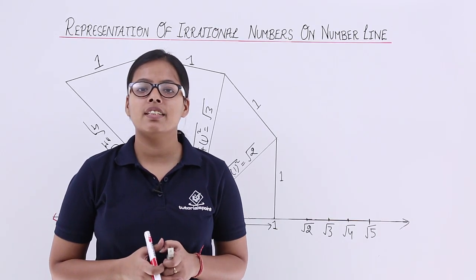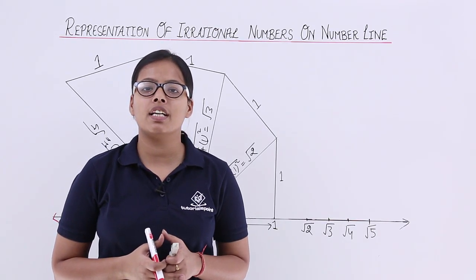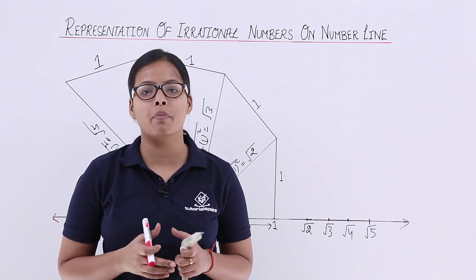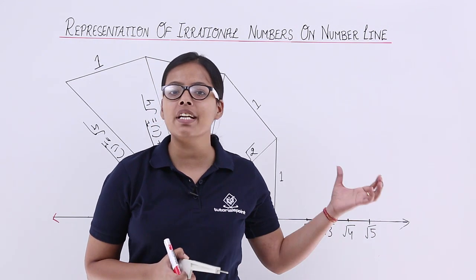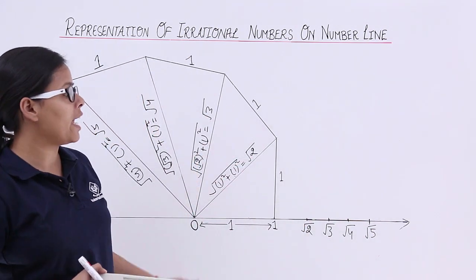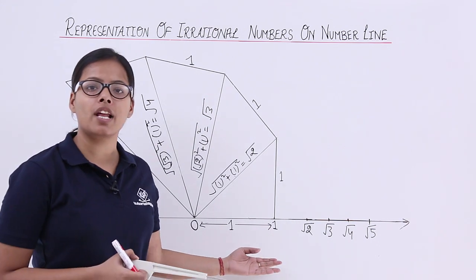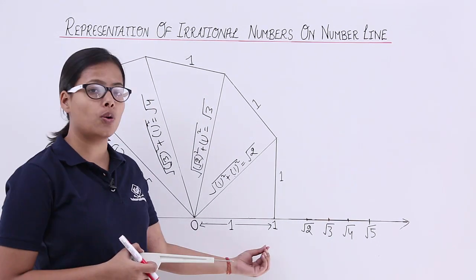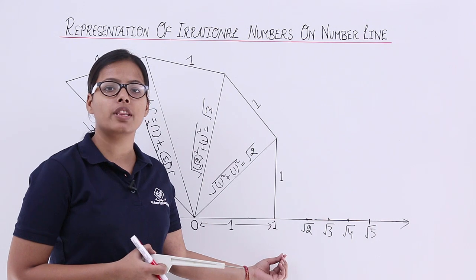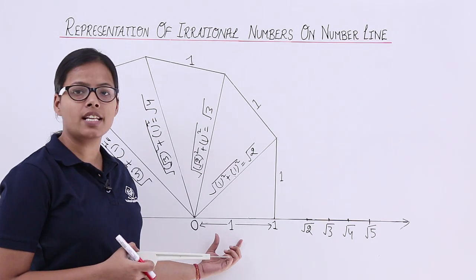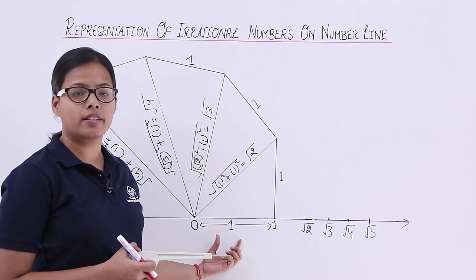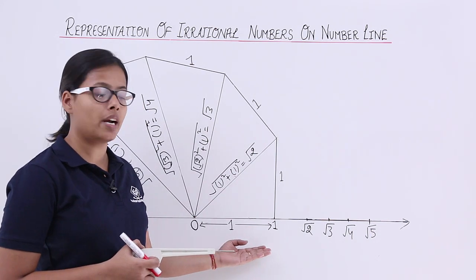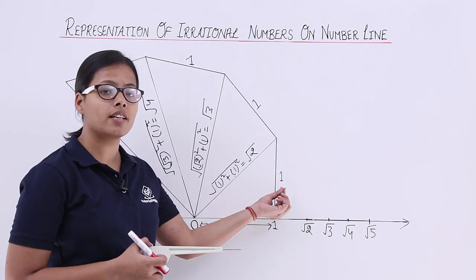Hello guys, today in this class I am going to discuss representation of irrational numbers on a number line. To represent irrational numbers on a number line, I have drawn a line here, and I have located 0 and 1 on this number line, whose length is 1. I have also drawn a perpendicular line on this number line of length 1.